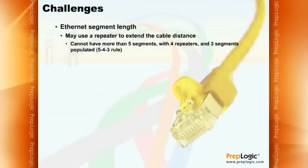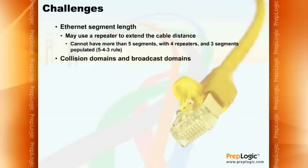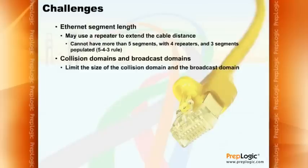Since most technology has been designed to scale networks to any size without worrying too much about segment cable length, we need to focus more on collision domains and broadcast domains — the things Cisco really focuses on. Our main goal is to limit the size of both. Assume we have a hub with 50 PCs connected. Every time one person sends data, all 49 other systems have to examine it and compete for the same segment bandwidth — it's the same collision domain.